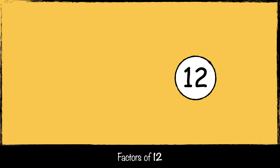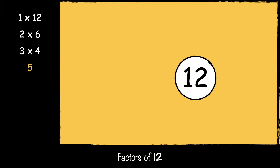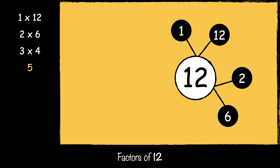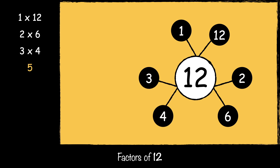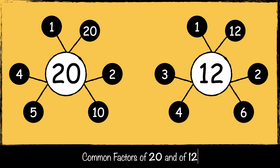Now let's have a look at the factors of 12. Here are the numbers that multiply to make 12: 1 and 12, 2 and 6, 3 and 4. 5 cannot be multiplied to make 12, so 5 is not a factor of 12.